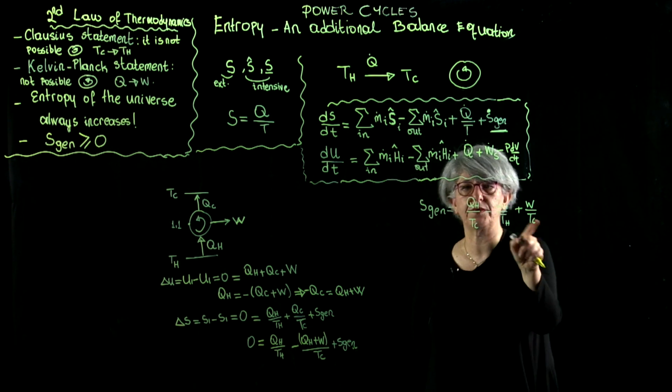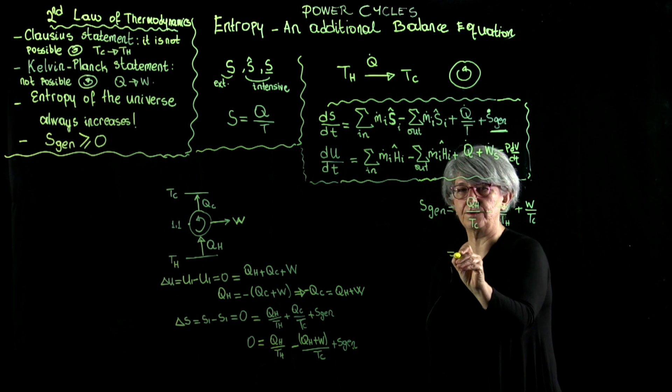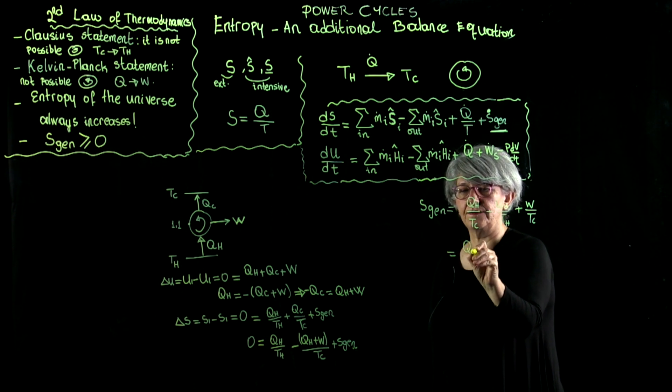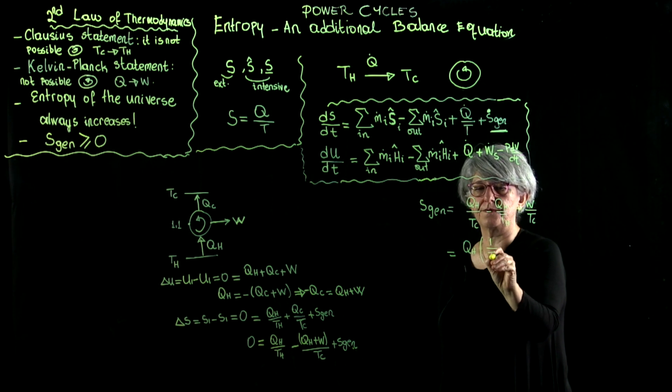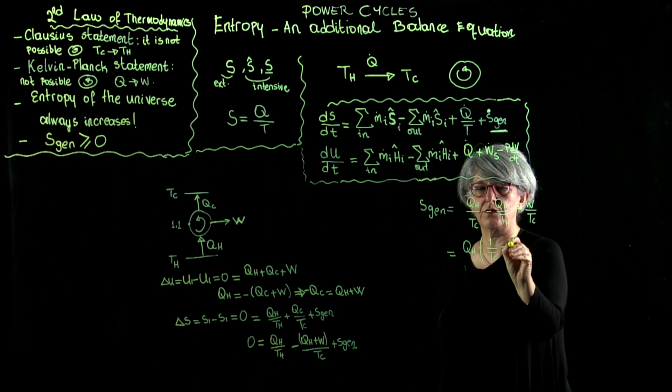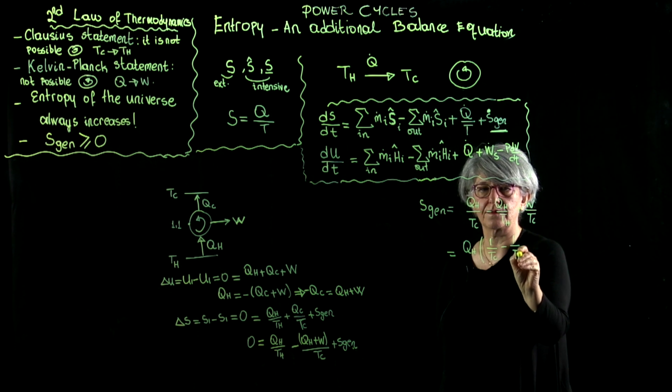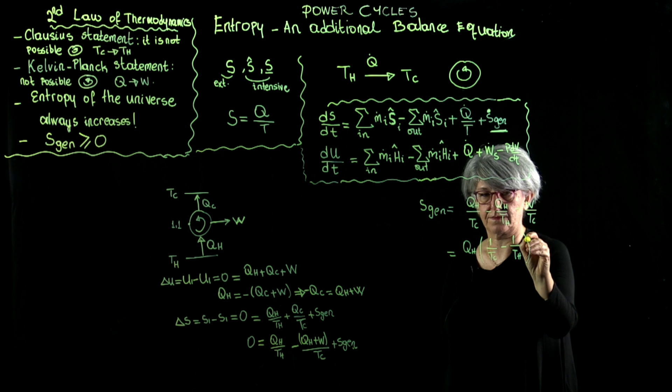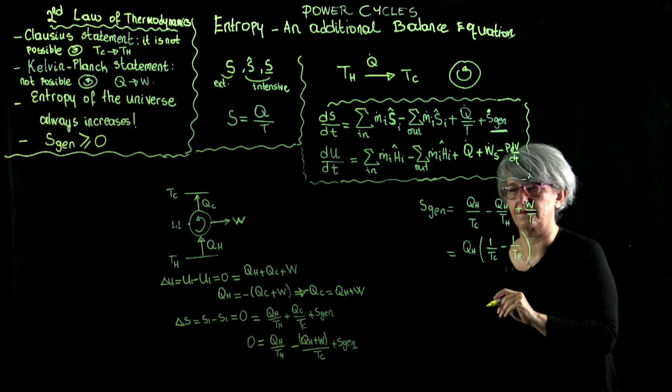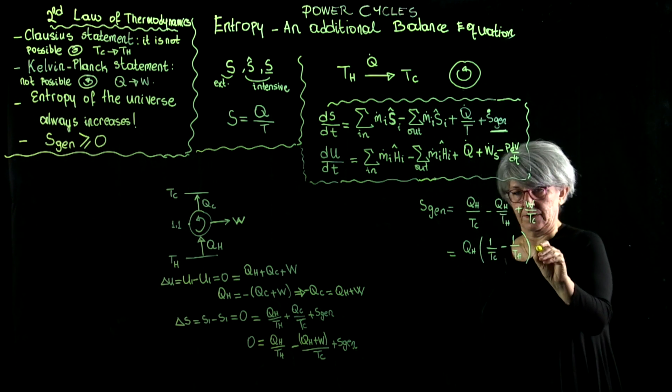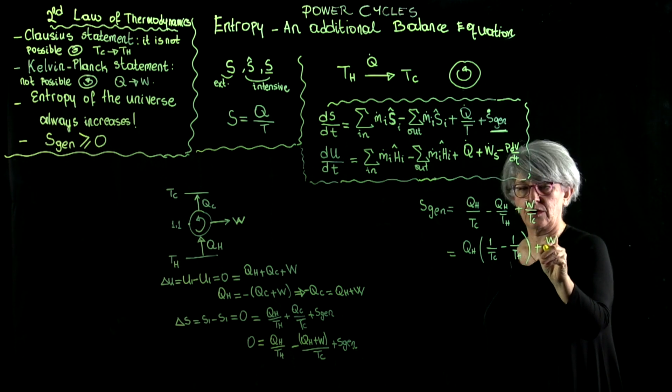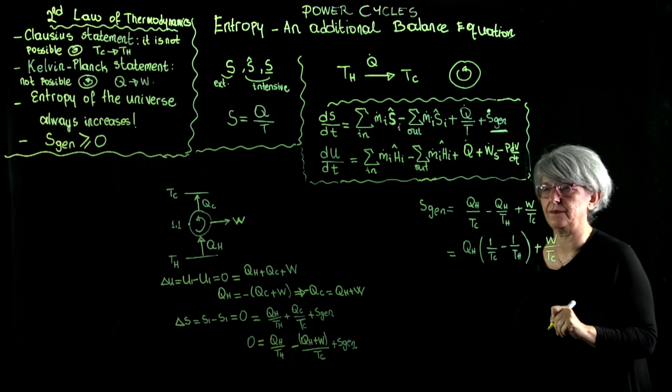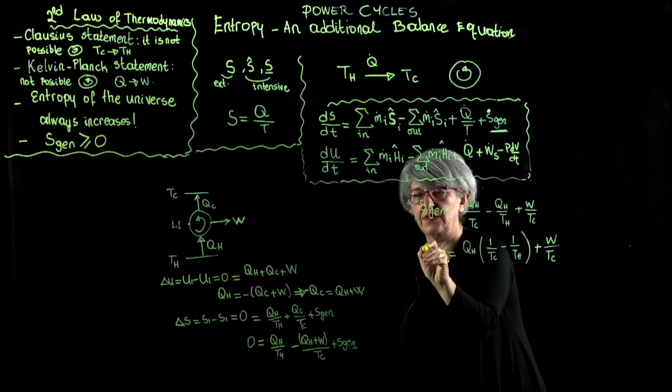I will regroup: q hot times 1 over t_c minus 1 over t_h, plus work over t sub c equals s generated.